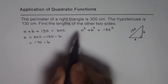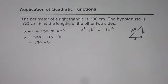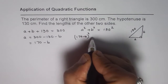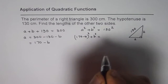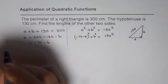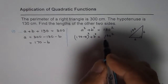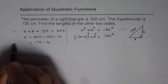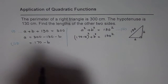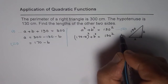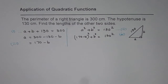Let us substitute this value of A into the Pythagorean equation to find B. So what we get is: (170 minus B) squared plus B squared equals 130 squared. We began with two equations — equation one and equation two. From equation one we found A in terms of B, and substituting into equation two gives us one equation in one variable, which we can now solve for B.